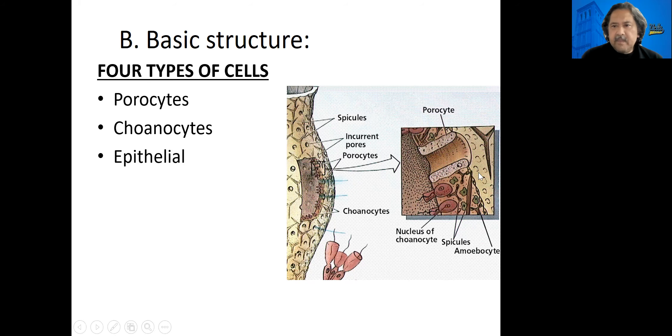The third type of cell is called the epithelial cell, and the epithelial cell, just like in your body, makes up the outside of the organism. They're for protection.